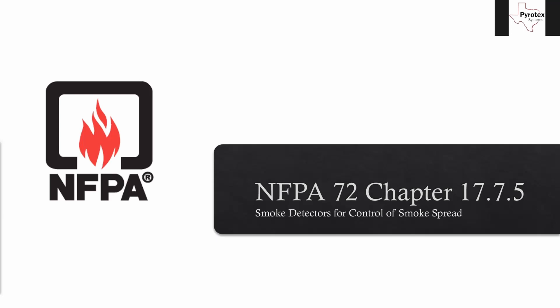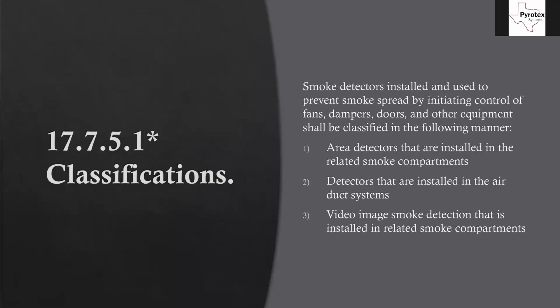Today we're focusing on duct detectors. There are a few classifications for smoke detectors used for preventive smoke spread. Smoke detectors used to prevent smoke spread by initiating control of fans, dampers, doors, and other equipment shall be classified as: area detectors installed in related smoke compartments, detectors installed in the air duct system, or video image smoke detection in related smoke compartments. Today we're focusing on the second one — detectors installed in the air duct system.